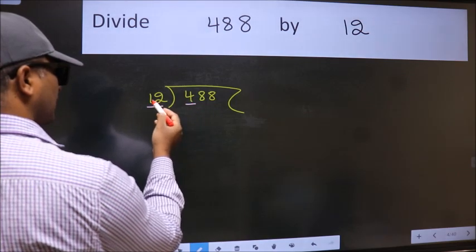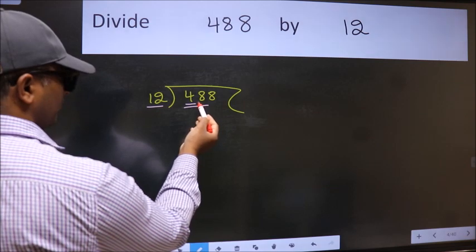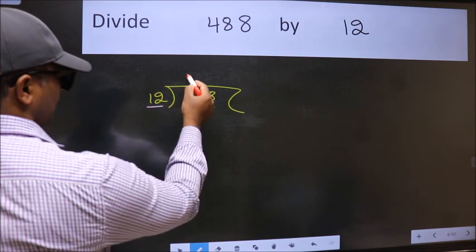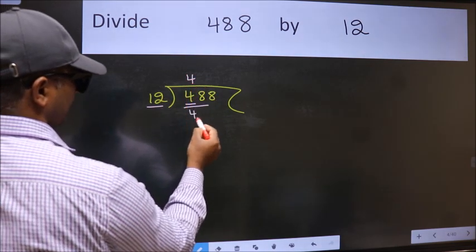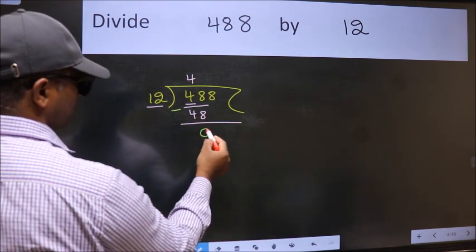4 is smaller than 12, so take two numbers: 48. When do we get 48 in 12 table? 12 times 4 is 48. Now we should subtract. We get 0.